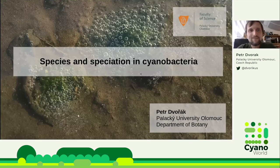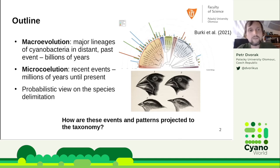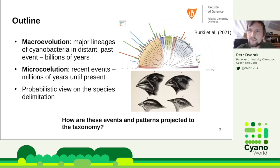I will start my presentation on species and speciation in cyanobacteria with a little outline. I would like to take you on a journey covering 3 billion years, maybe even more, and what we see today in cyanobacterial diversity. I will start in the deep past with macroevolutionary patterns over hundreds of millions of years, then continue with patterns we can see today, and finish with how we can delimit species using probabilistic tools.